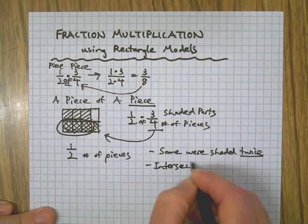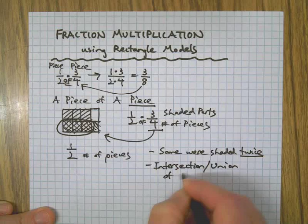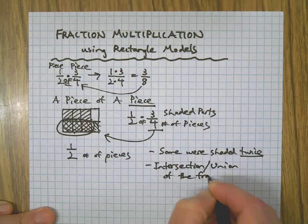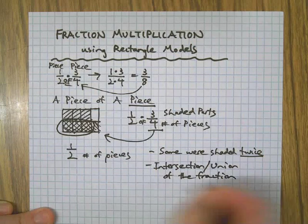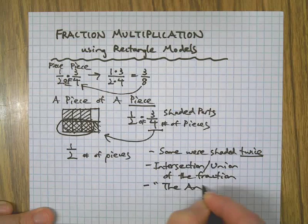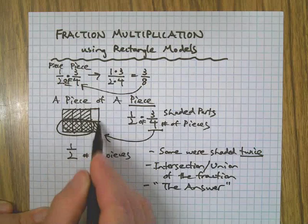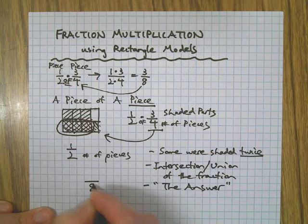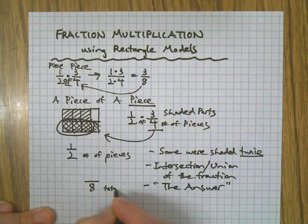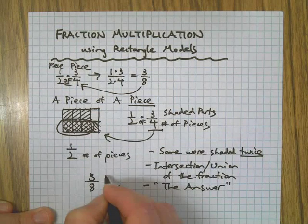That's what's the intersection or the union of these two fractions, and that's actually the answer. So we just count how many total pieces are there—eight total pieces—and how many were shaded twice? Three of them.